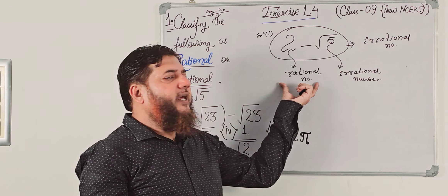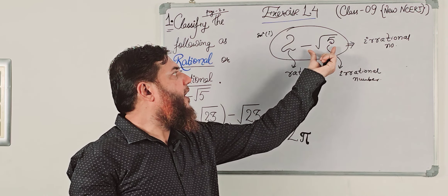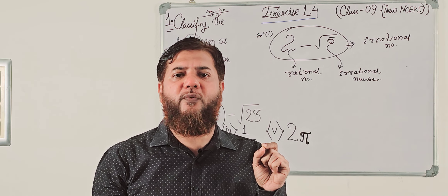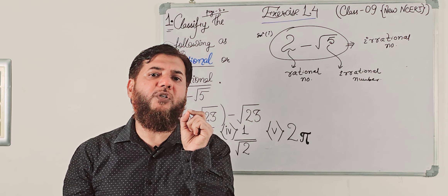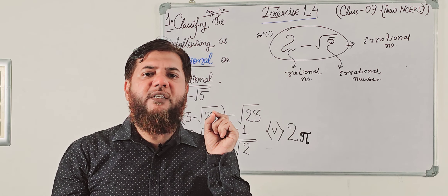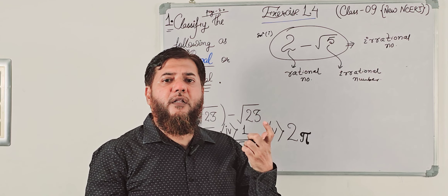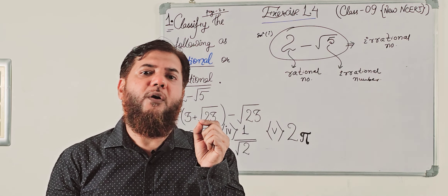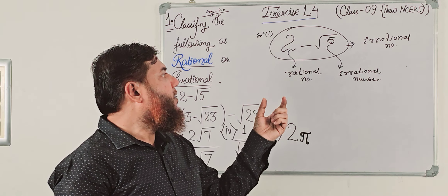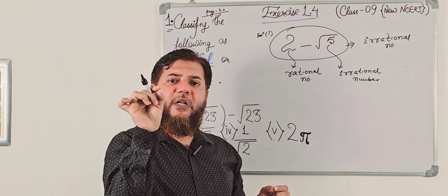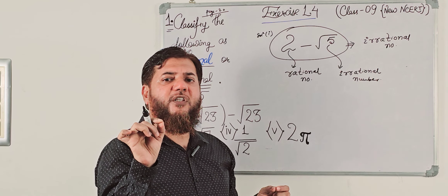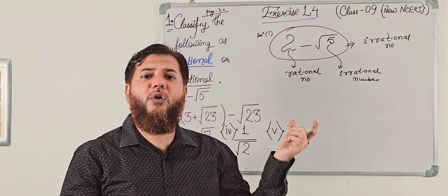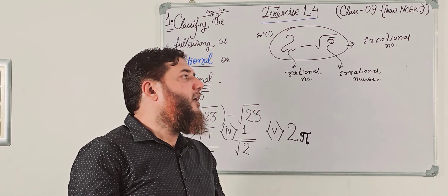2 is rational because it can be written as 2 by 1. Root 5: here 5 is an imperfect square — it is not a perfect square. The perfect square numbers are 4 (2 squared), 9 (3 squared), 16 (4 squared), 25 (5 squared). Numbers that are not perfect squares include root 2, root 3, root 5. Any natural number inside a root that is not a perfect square is irrational. So the sum, difference, product, or division of a rational with an irrational is always irrational.